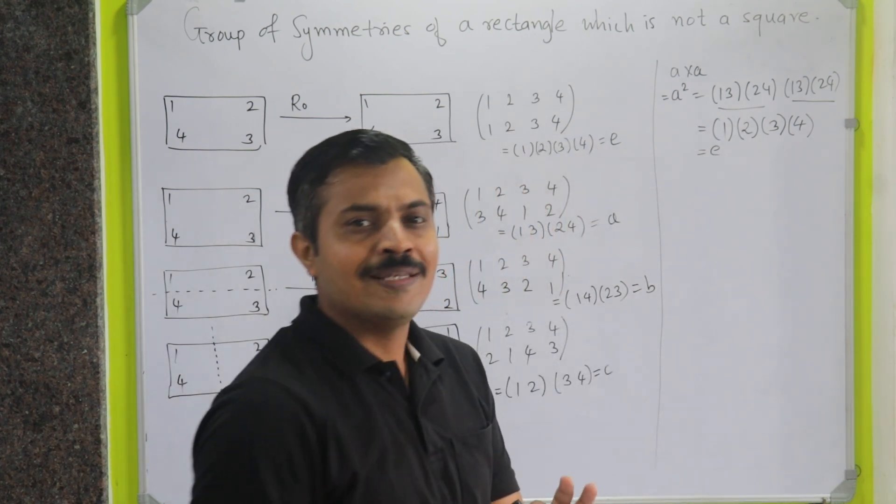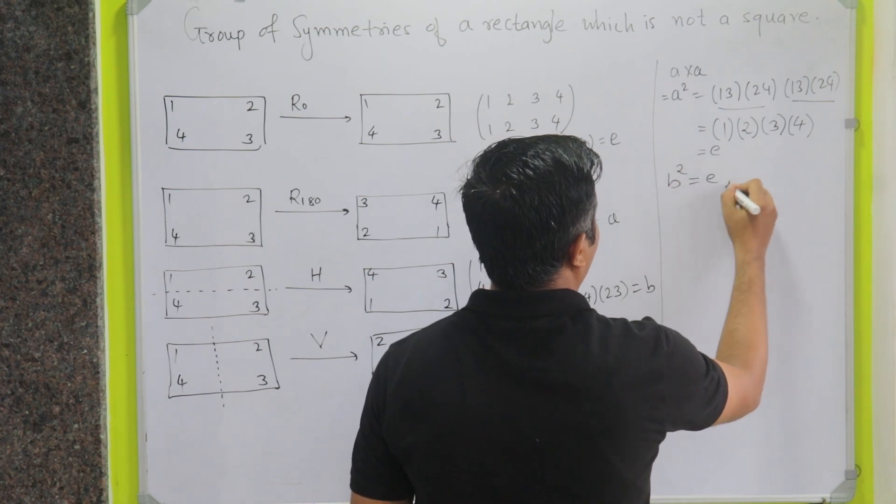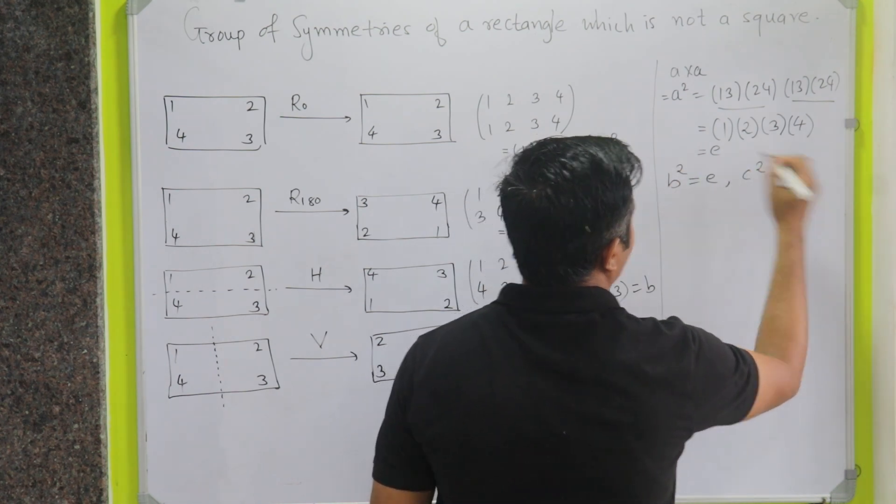By doing similar calculations, we can see that B square is also E and C square is also E.